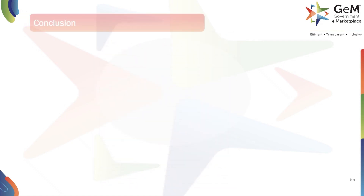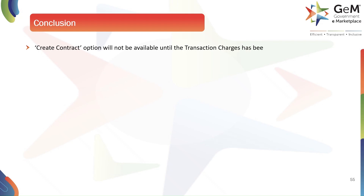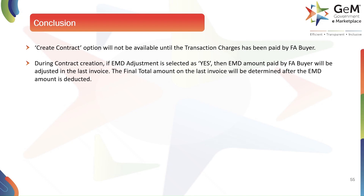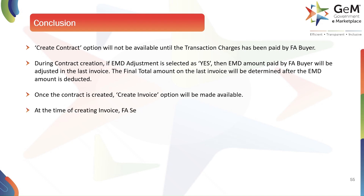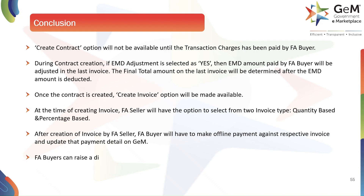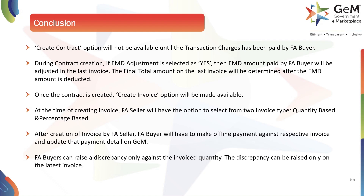To wrap up, here are some key takeaways from the process: the Create Contract option will not be available until transaction charges have been paid by the FA buyer. During contract creation, if EMD adjustment is selected as Yes, the EMD amount paid by the FA buyer will be adjusted in the last invoice. Once the contract is created, the Create Invoice option will be made available. At the time of creating an invoice, the FA seller will have the option to select from two invoice types: Quantity Based and Percentage Based. After creation of the invoice, the FA buyer will have to make offline payment against the respective invoice and update the payment detail on GeM. FA buyers can raise a discrepancy only against the invoiced quantity, and the discrepancy can be raised only on the latest invoice. Thank you.